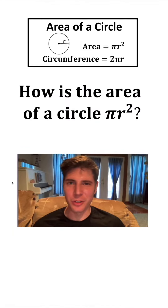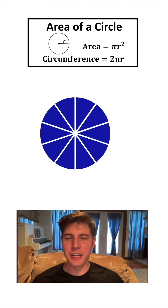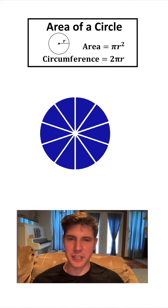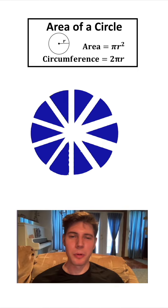Why is the area of a circle pi R squared? We take a circle and cut it up into a huge number of pieces — 10 is all I could fit for this example, but imagine much, much more. Then we pull it apart.